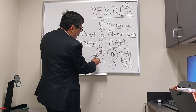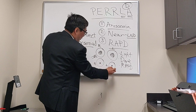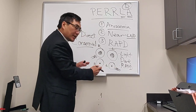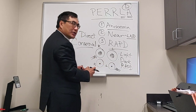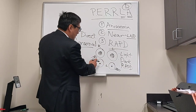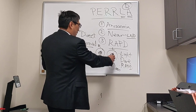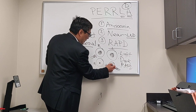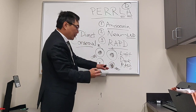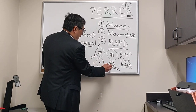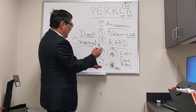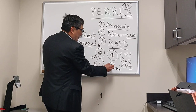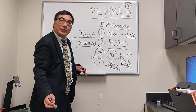Likewise, if we swing the light from the right pupil to the left pupil, the constriction will be maintained — there might be a little bit of difference while you're swinging. But if we see that the pupil dilates when we swing to the left eye, that means the direct response in the left pupil is less than the consensual response from the right pupil.